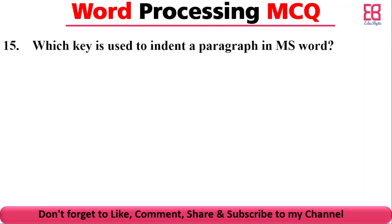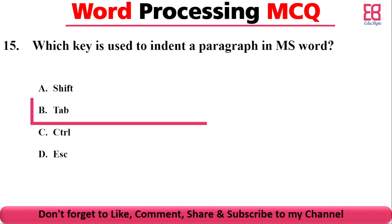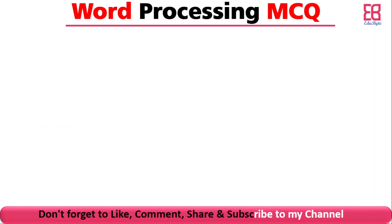Which key is used to indent a paragraph in MS Word? The answer is Tab — pressing Tab indents the paragraph, moving the first line to the right side. The options included Shift+Tab, Ctrl, and Tab, and the correct answer is Tab.